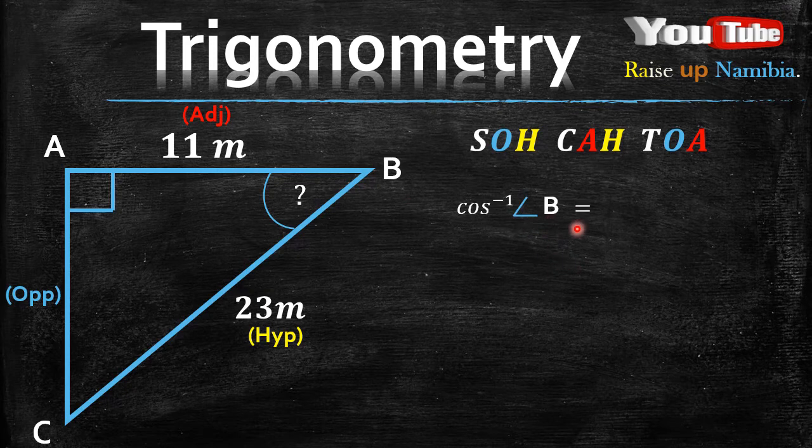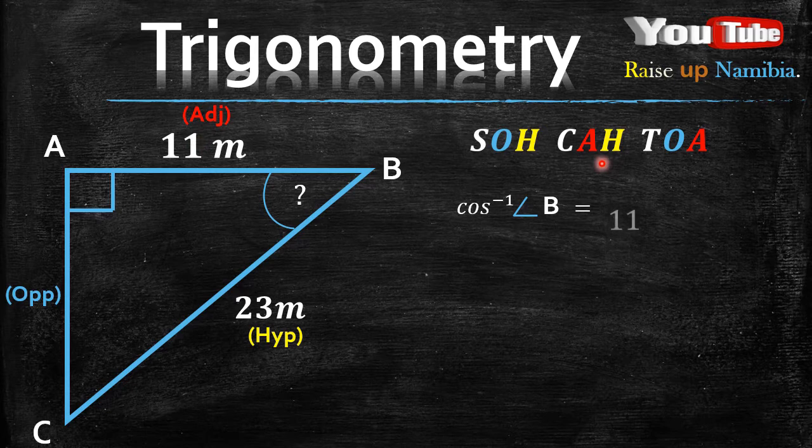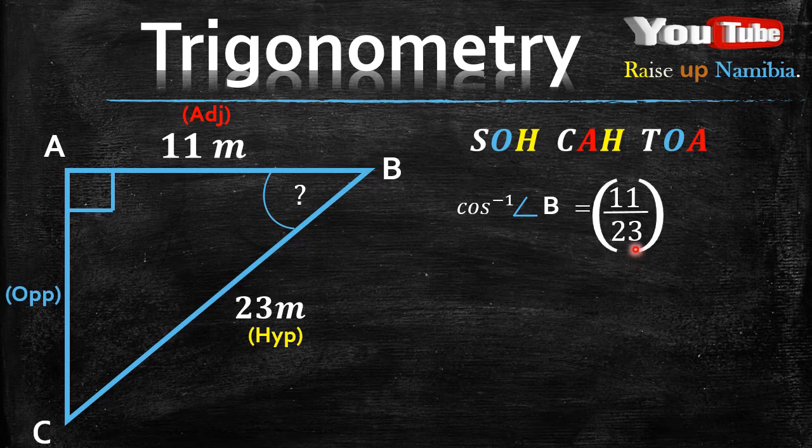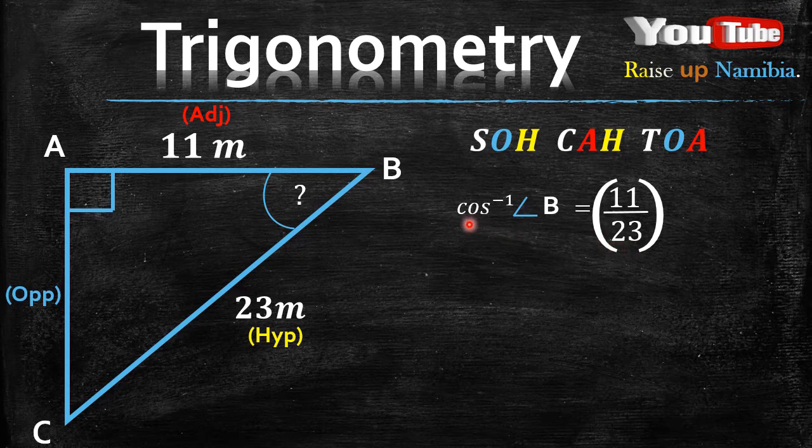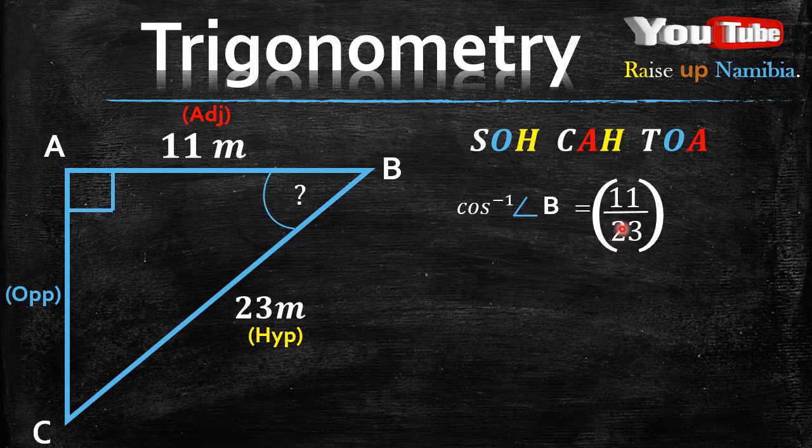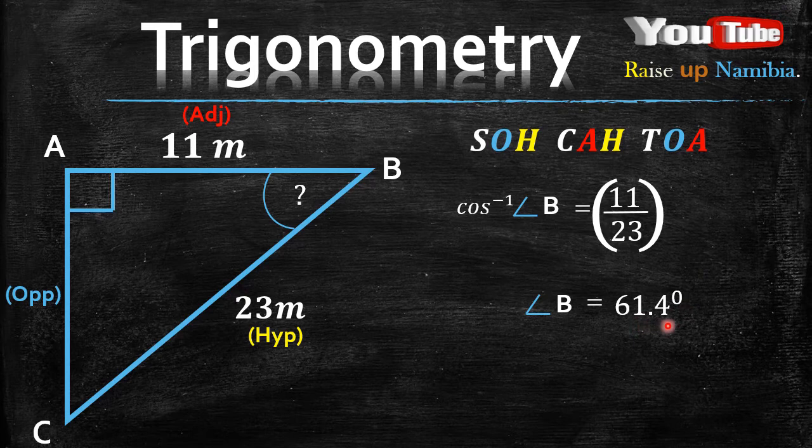When you come back to your CAH, next to the C you have an A for adjacent, which means 11. So 11 divided by our hypotenuse. What is our hypotenuse? It's 23. So we divide it by 23. Now remember, very important, you put them into brackets. Into your calculator, you type the shift and then the cosine to get the inverse of cosine. Then open bracket, 11 divided by 23, then you close the bracket and then the equal sign. So your answer will be 61.4 degrees. And that's your angle B.